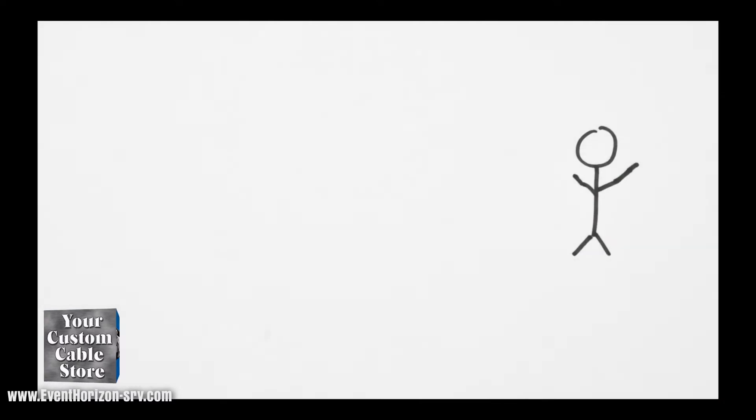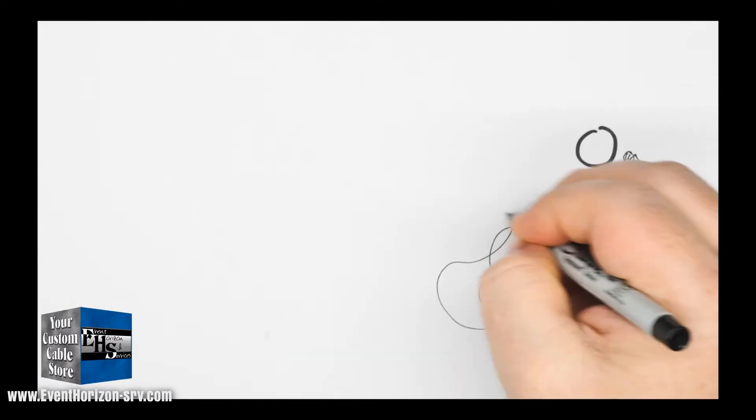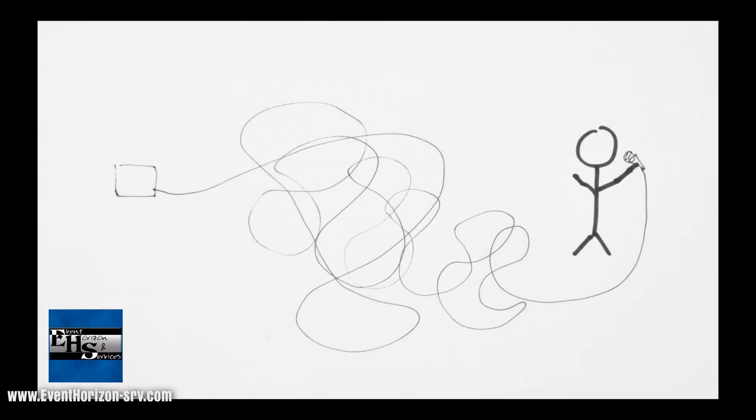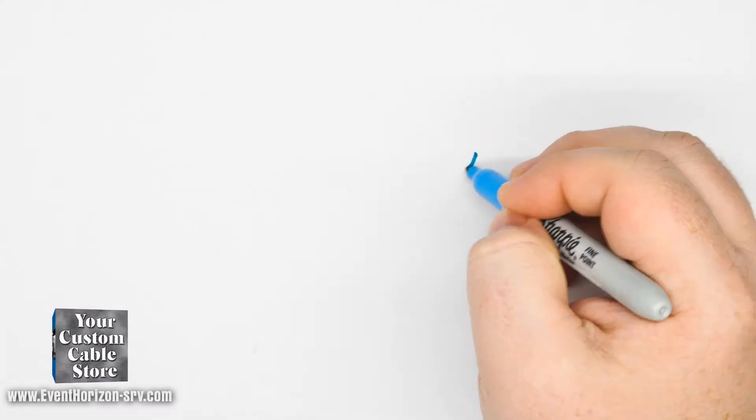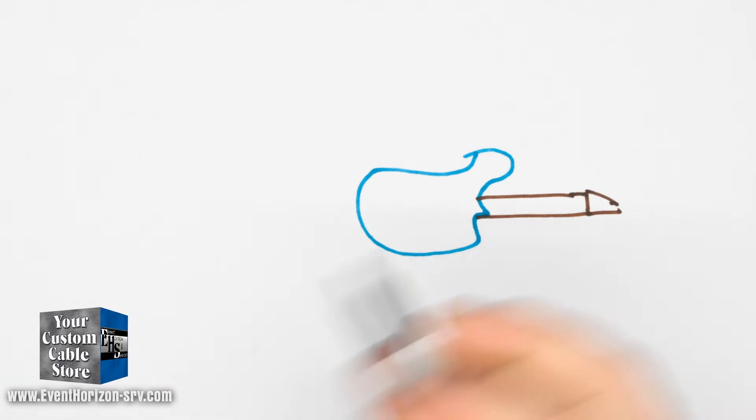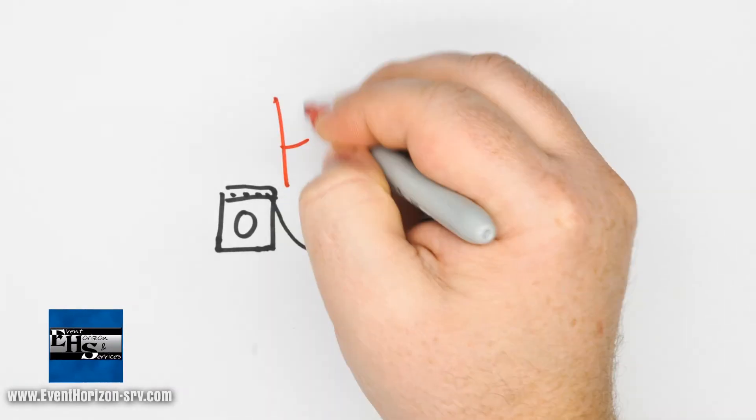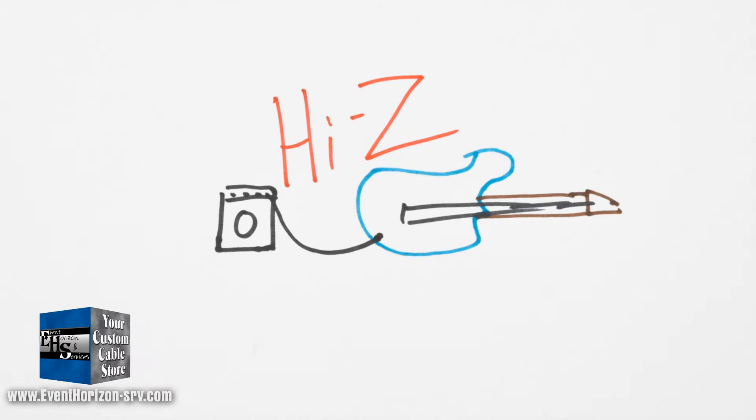If you've ever used a microphone, you might know that you can run the signal a very long way with very little loss and noise. Microphones are low impedance. Most standard guitars and related equipment are high impedance. So we're going to take a look at the impedance issue and see what role it plays.